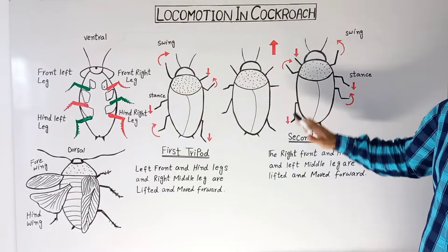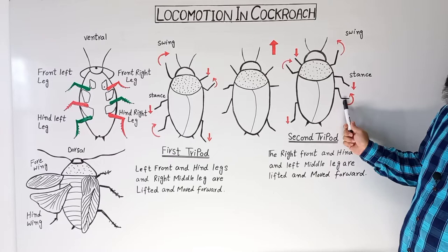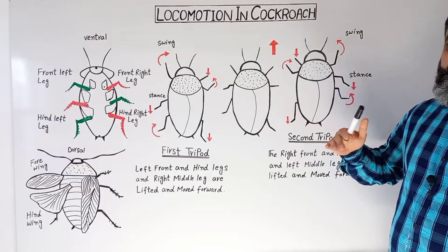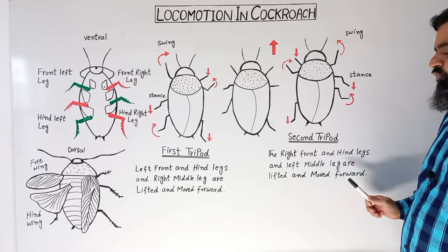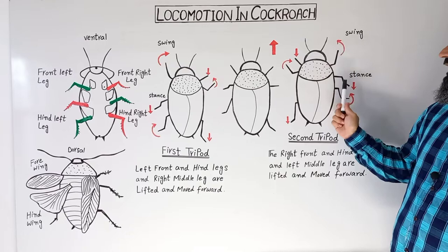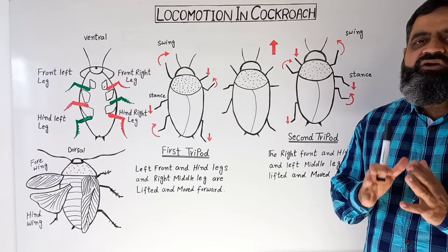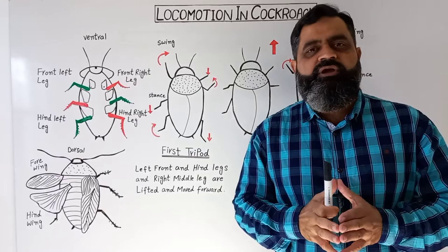In the second tripod, the right front leg, right hind leg, and left middle leg are lifted above the ground and moved forward. The right front leg pulls the animal forward, the right hind leg pushes it forward, and the left middle leg makes a stance as a prop on the ground. In this way, alternating the first tripod and second tripod moves the animal forward at a considerable speed.